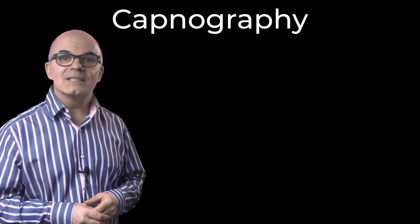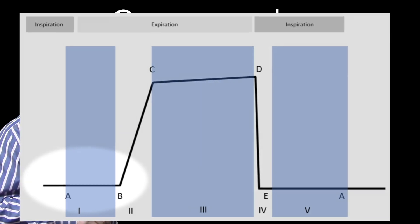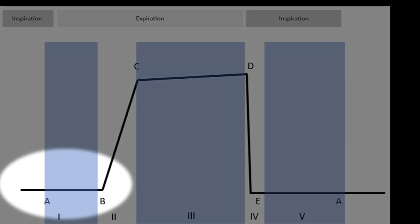Phases of capnography. The capnography trace can be broken down into five phases. Phase one, A to B. This is the inspiratory baseline, and this is where inspiration is taking place so no CO2 is being detected. The end of phase one is the beginning of expiration. However, this is composed of gases expired from the unventilated mechanical and physiological dead space, so the line remains at zero.